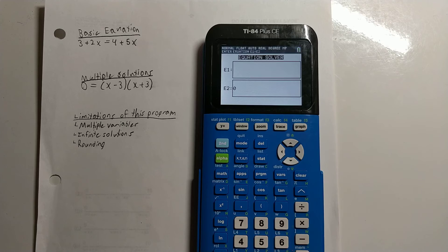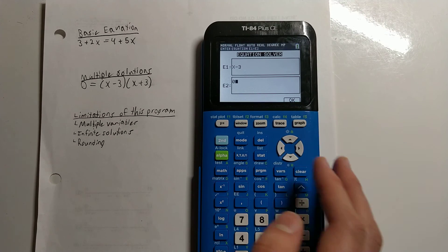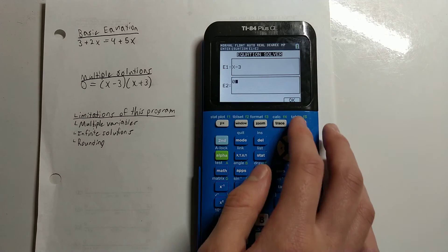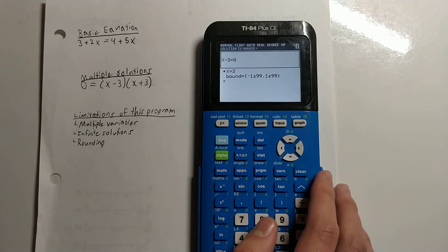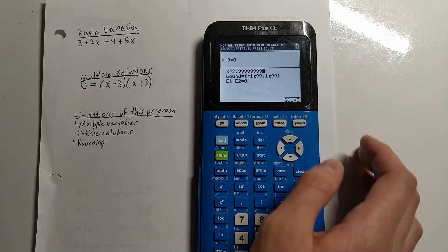And then the final thing that can happen is that sometimes we do like x-3=0. So the solution would be 3 here, and it does say that, but sometimes it'll give us something like 2.9999 repeating.